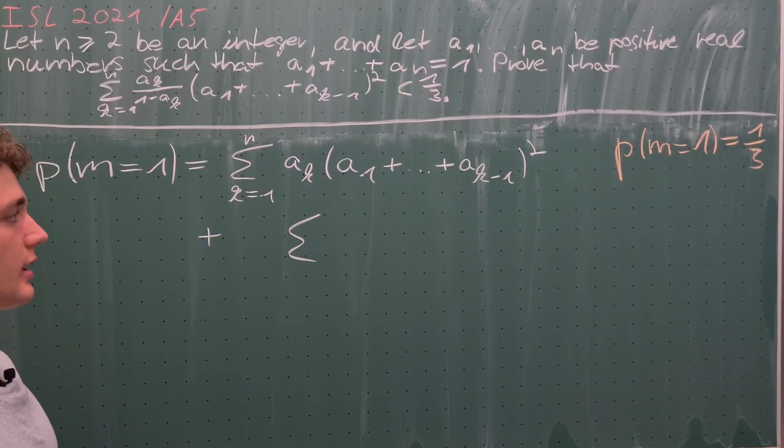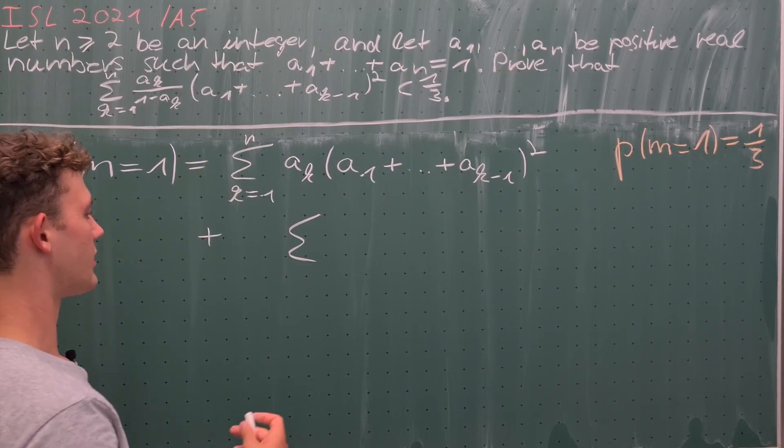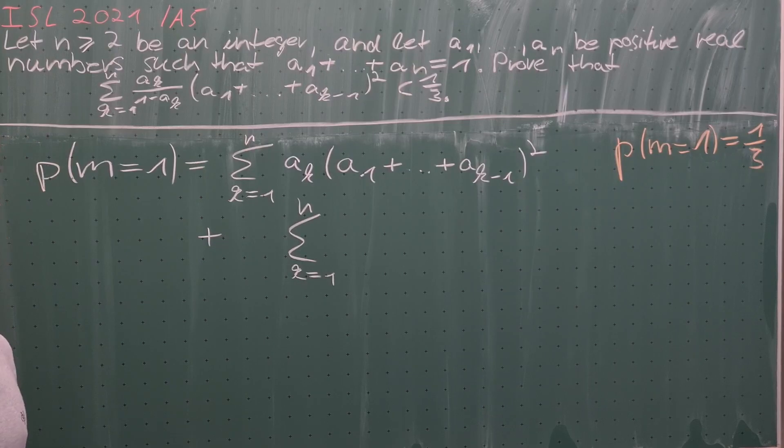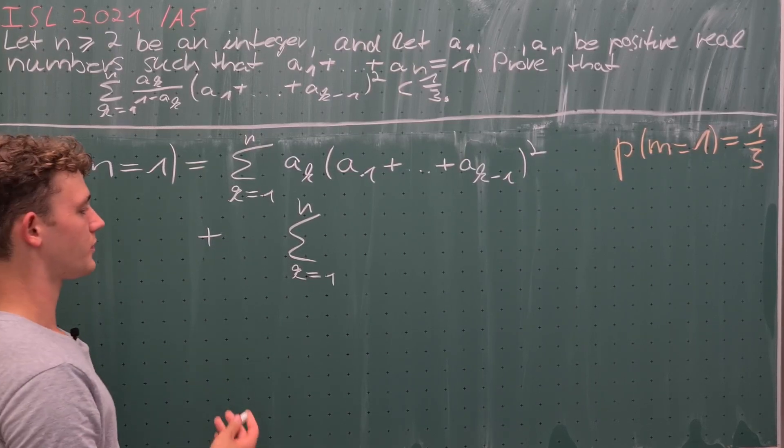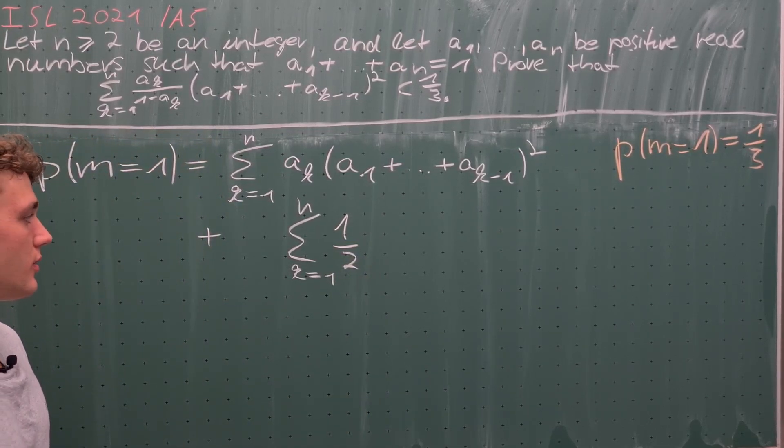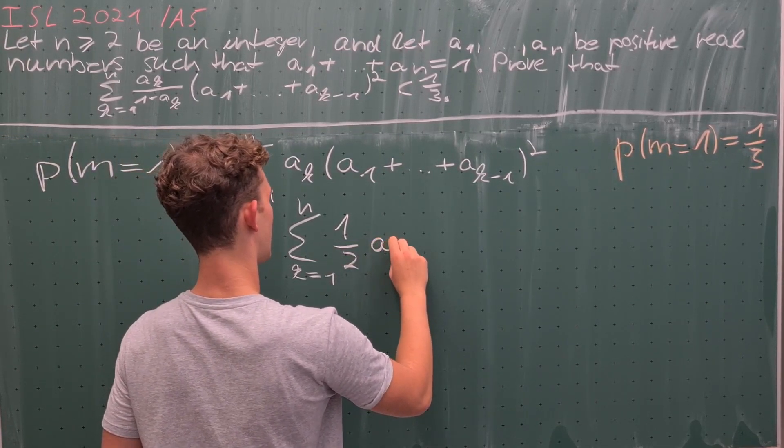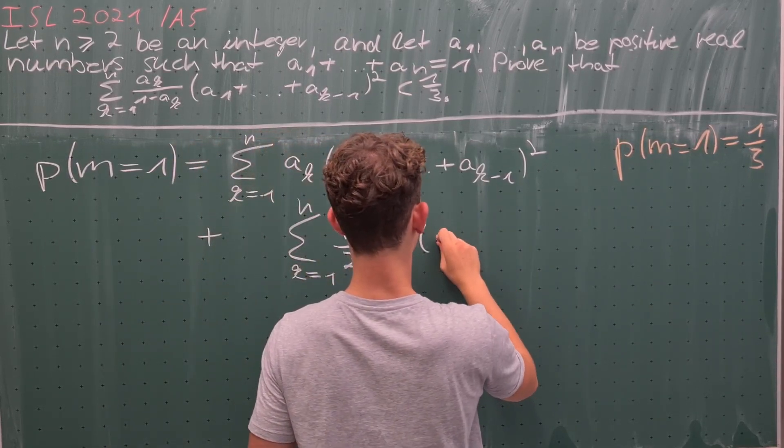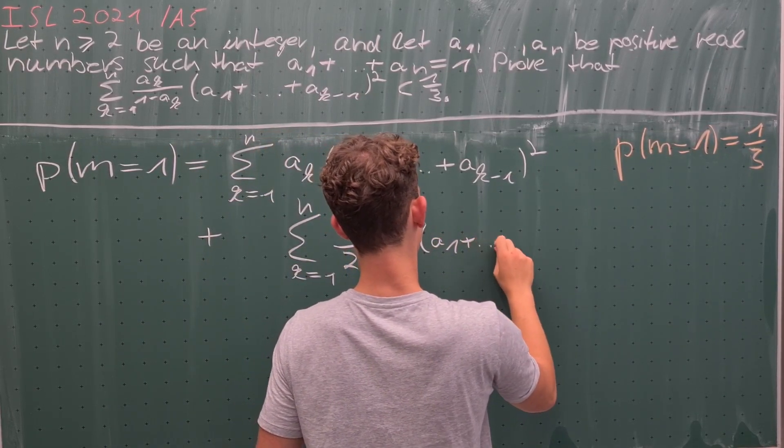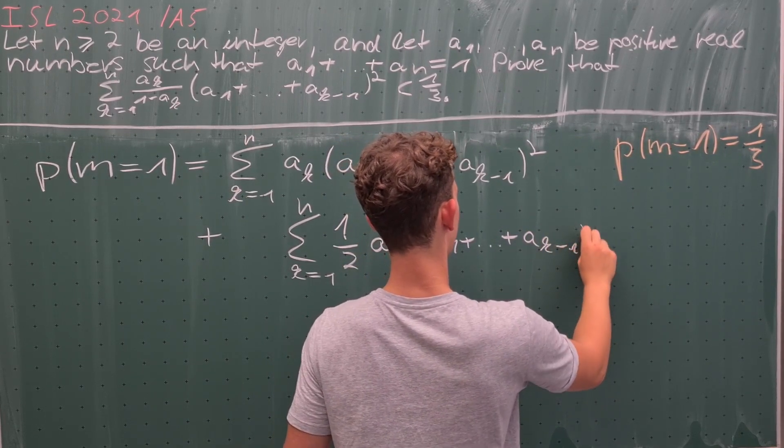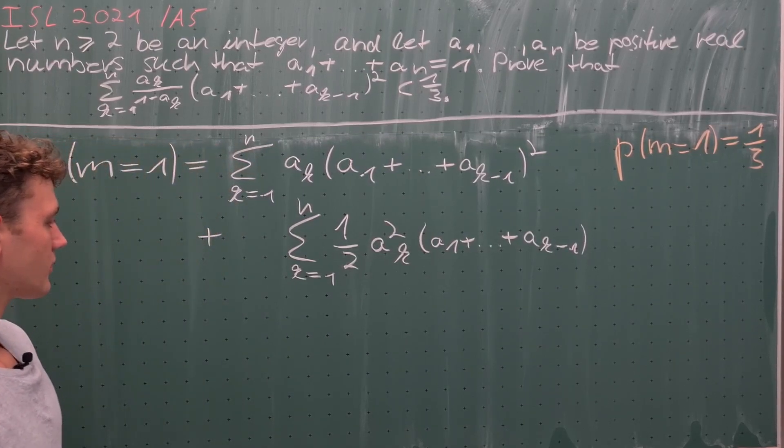Now adding the other two cases: the second case is that z_1 equals z_2, but they are both greater than z_3. Therefore we get the sum going from k equals 1 up to n of one half, because we will choose randomly between one and two in this case, times a_k squared times this sum but not squared, because only z_3 is less than z_1 and z_2.